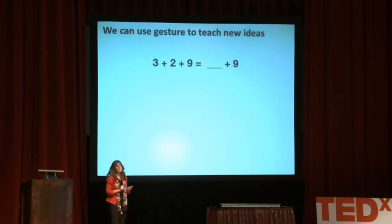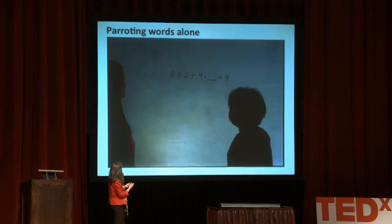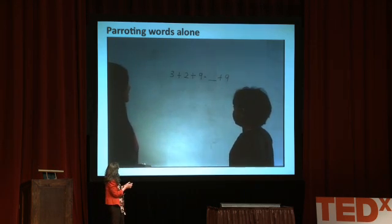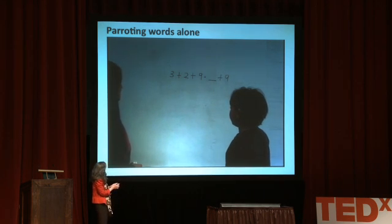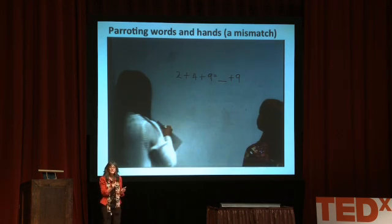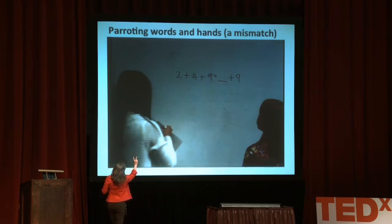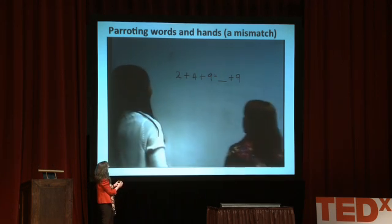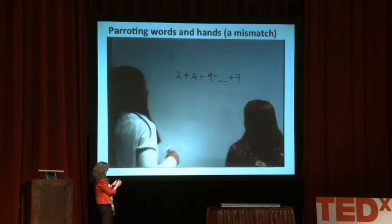We looked again at the math problem and encouraged children to produce words. The first set were told to produce the equalizer strategy — to parrot these words every time to solve the problem: 'I want to make one side equal to the other side.' A second child was told to say exactly the same words, but also to produce a grouping gesture — a V under two numbers, grouping them together, and then a point at the blank.